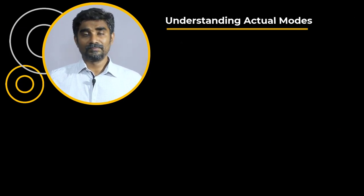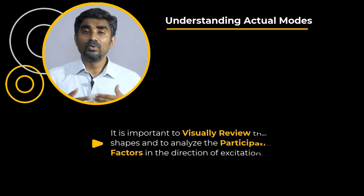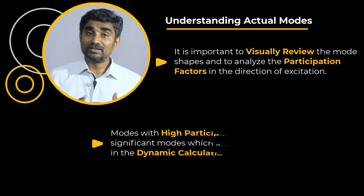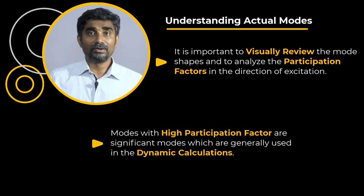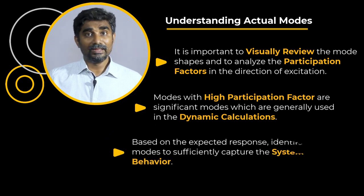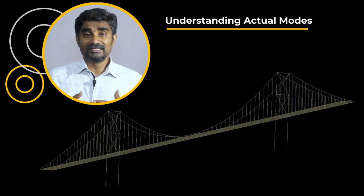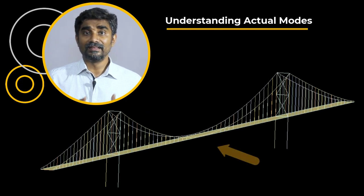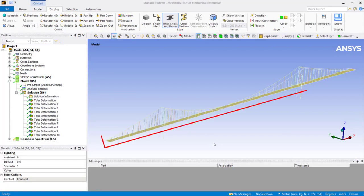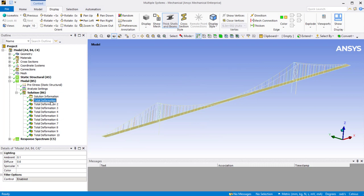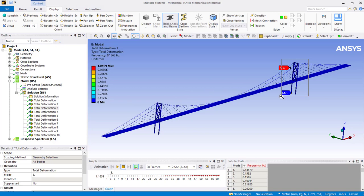Finally, understanding the actual modes. After solving any modal analysis, it is very important to visually review the mode shapes and to analyze the participation factors in the direction of excitation. Understanding which modes have a high participation factor is crucial because these are the significant modes used in dynamic calculations. Based on the applied loading and the expected response, we need to determine whether these modes would be sufficient to capture the system's behavior. For example, in a suspension bridge experiencing base acceleration in the y direction, the cables have lower bending stiffness, so all extracted modes capture the response of individual cables with no modes of the platform.